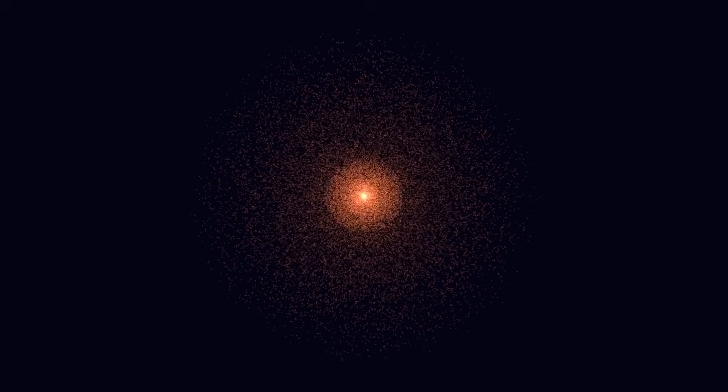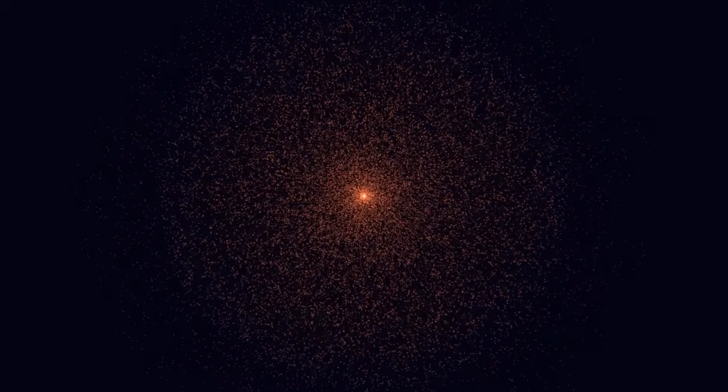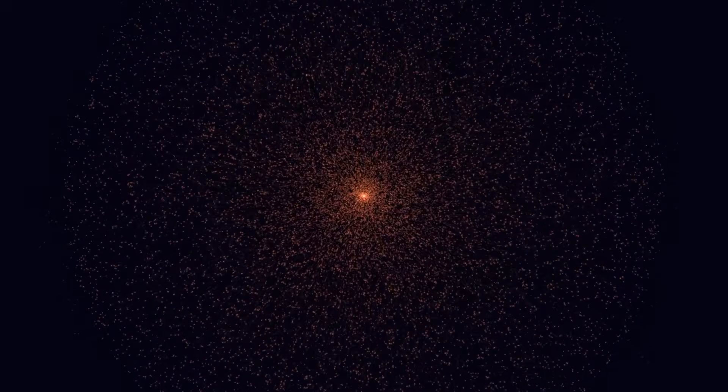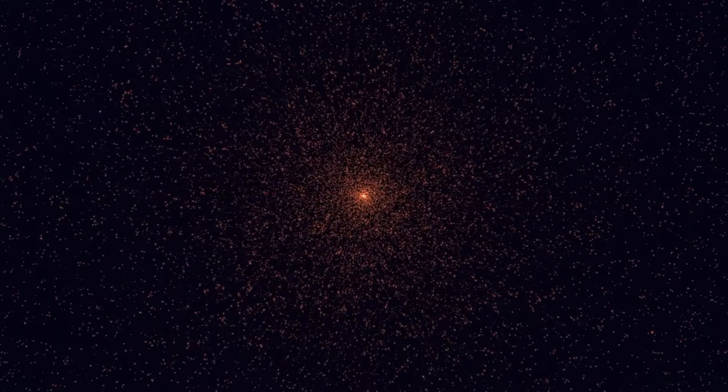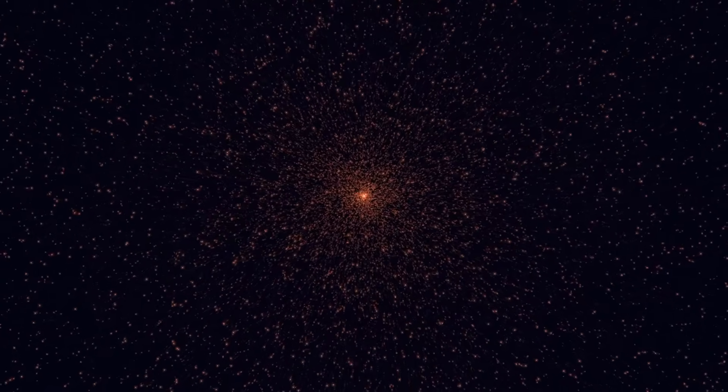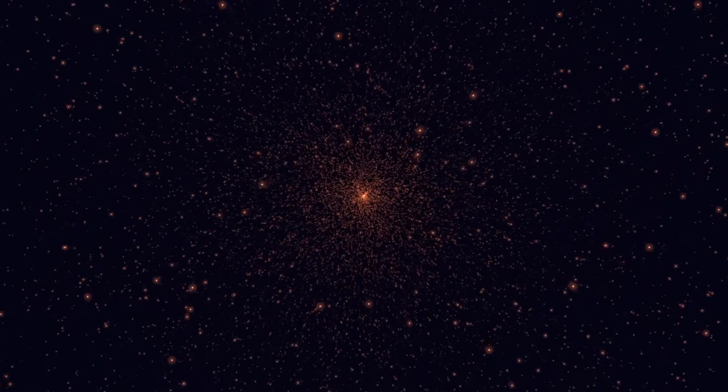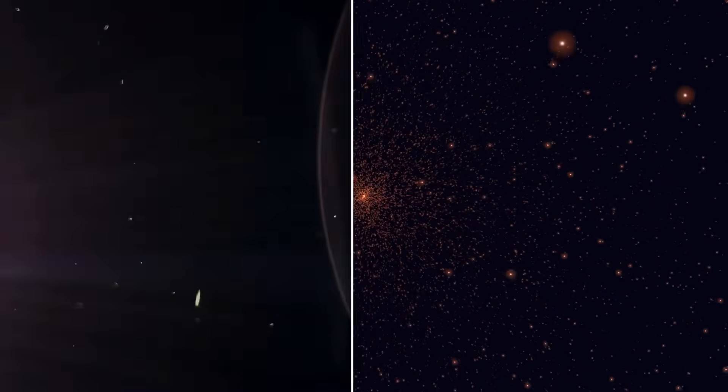As this impossible object continued its journey toward our sun, its behavior escalated from anomalous to utterly bizarre. Something began to happen that made astronomers sit up and stare at their screens in disbelief. The object was getting brighter. Not just a little brighter, but dramatically brighter. This was not the gentle warming of a frozen rock. It was an explosion in slow motion.